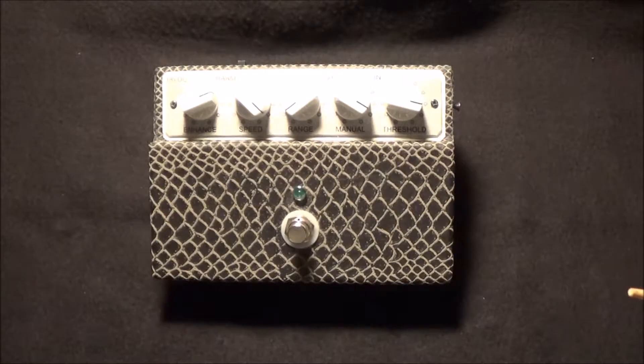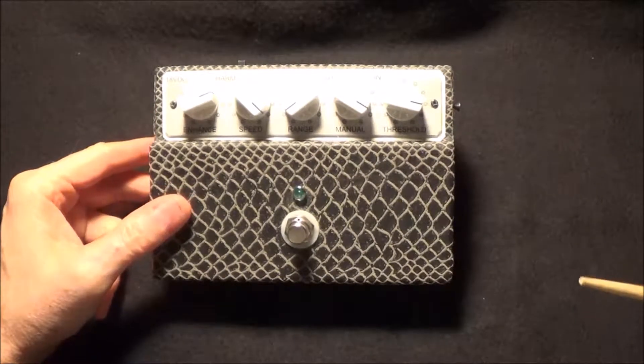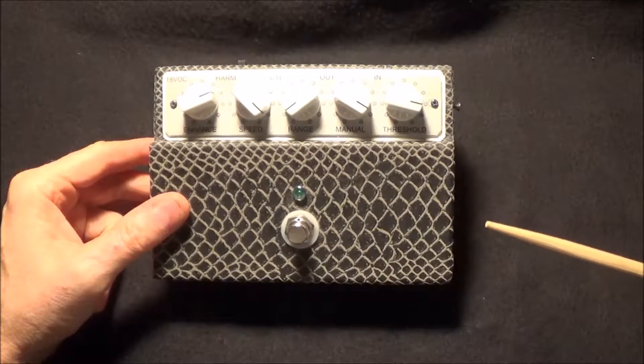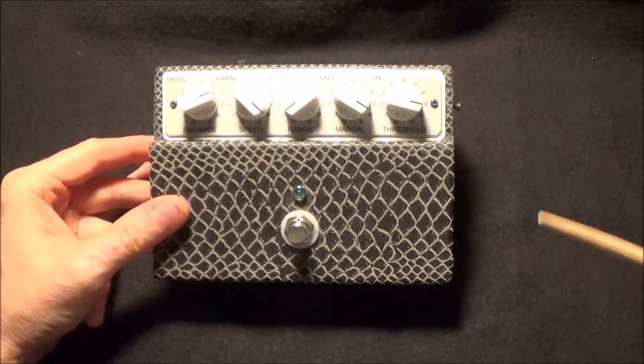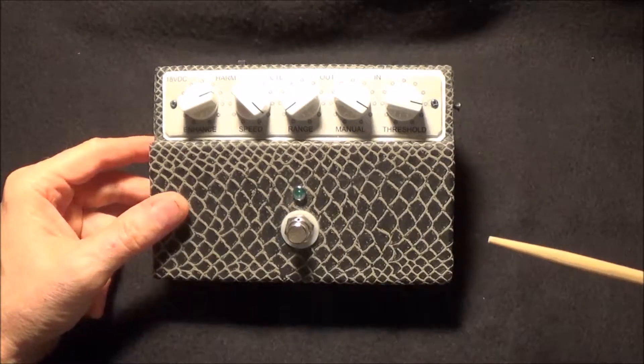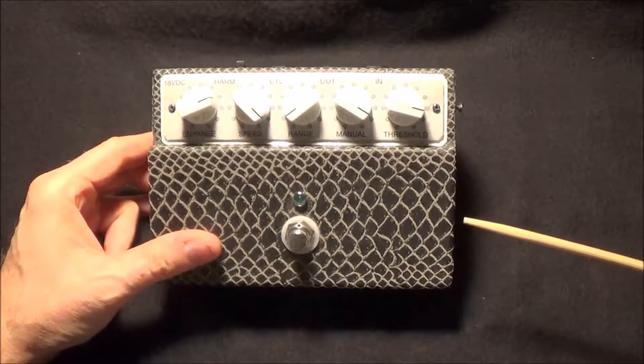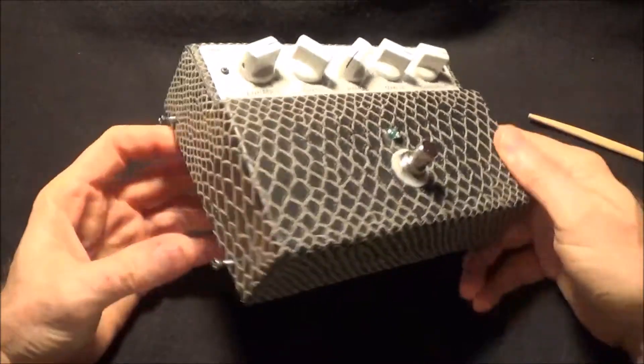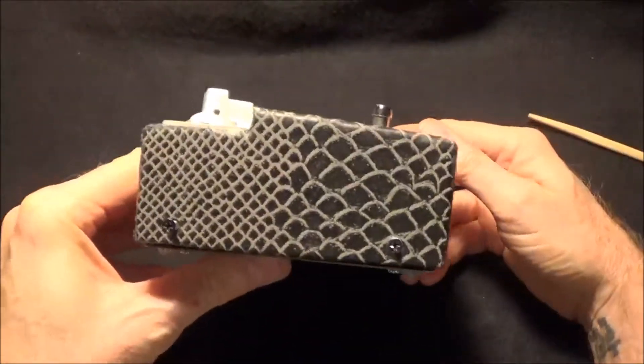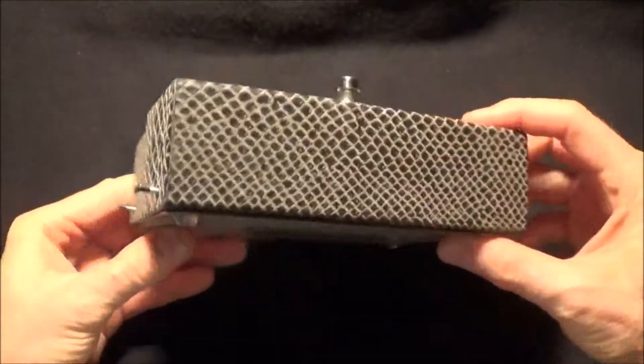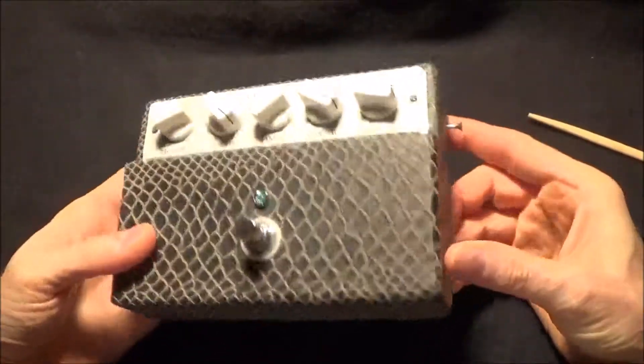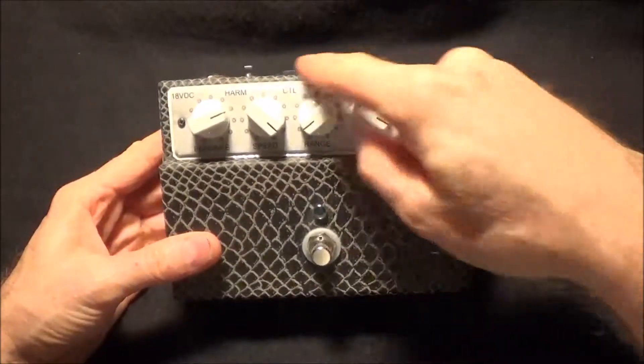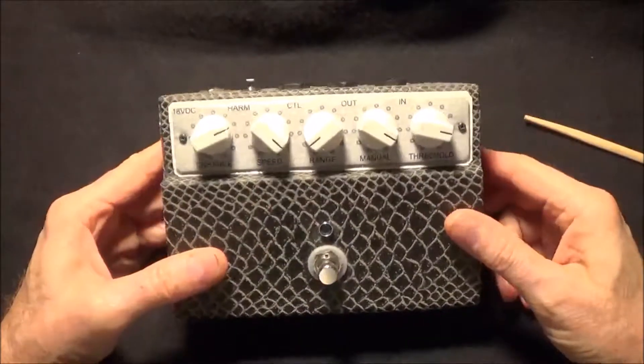I was actually repairing and modifying someone's ADA flanger to have the Paul Gilbert mod. While I had that in my possession, I used that to kind of design this enclosure. It basically follows the same size and shape of the ADA flanger, just without the little control fence, which I don't particularly like.